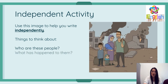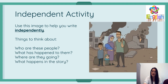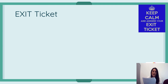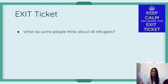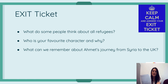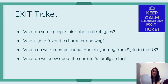Today's independent activity is to think about what life was like for Ahmet in Syria. I'd like you to do a piece of creative writing — imagine that you are there in Syria and that you've experienced what Ahmet has experienced. Think about who the people are, what's happened to them, where they're going, and what happens in the story. Use that image as your inspiration — it can be first or third person. Write an interesting description using that image as your foundation. Then complete today's exit ticket: What do some people think about all refugees? Who is your favourite character and why? What can you remember about Ahmet's journey from Syria to the UK? And what do we know about the narrator's family so far?